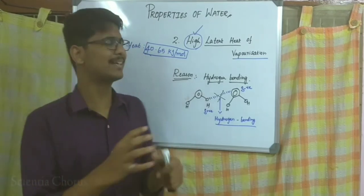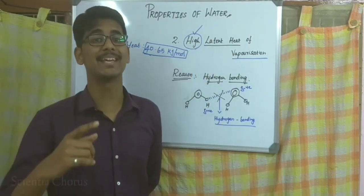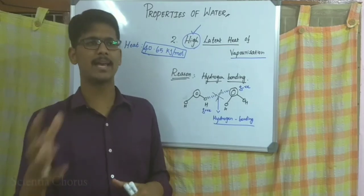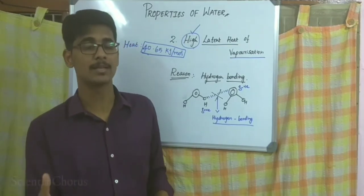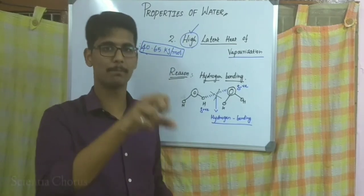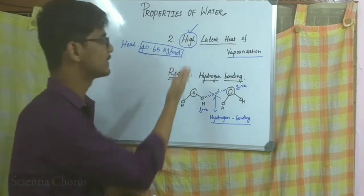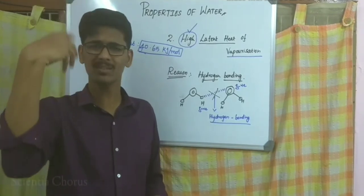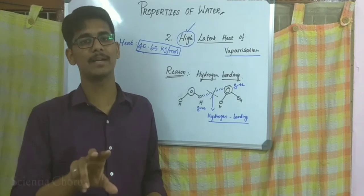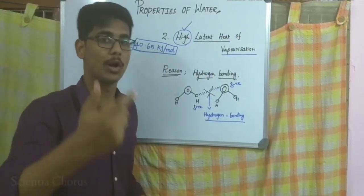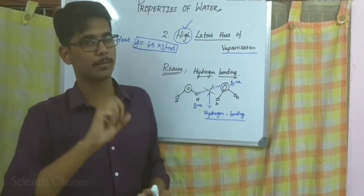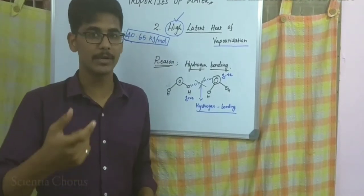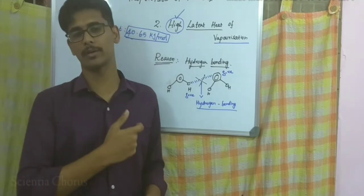The advantage of high latent heat of vaporization for plants: many plants survive in very low temperature areas of around 20 to 50°C. If water had a low latent heat of vaporization, the water molecules in plants would easily evaporate. The high latent heat of vaporization prevents this easy evaporation. So these are the two properties of water — adhesion and cohesion, and high latent heat of vaporization. In upcoming videos we'll discuss more properties of water.